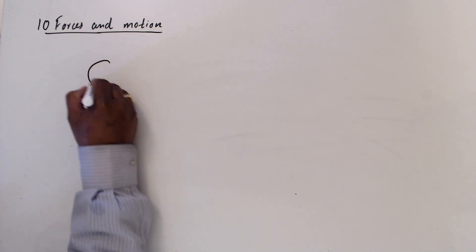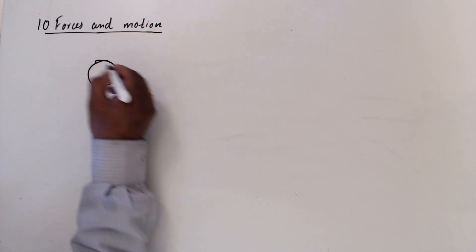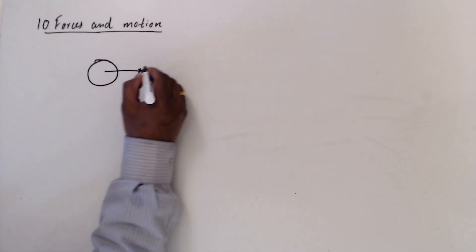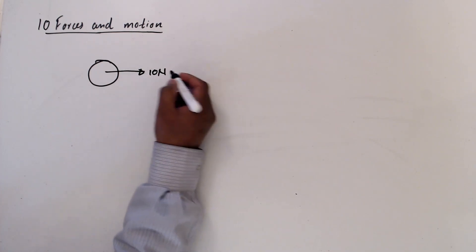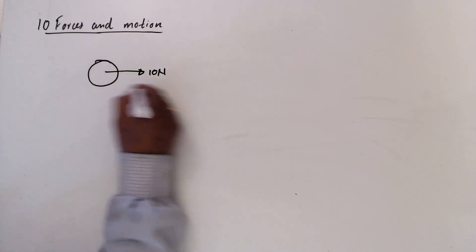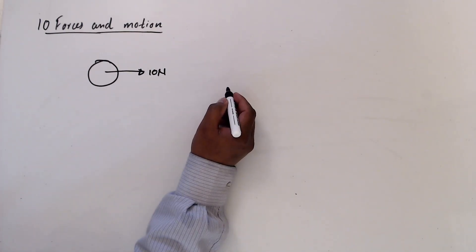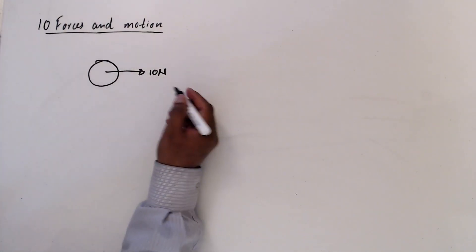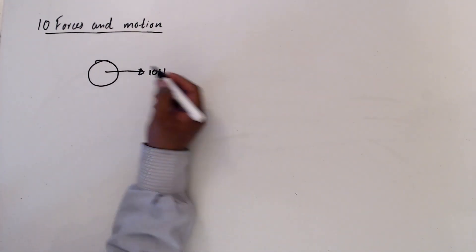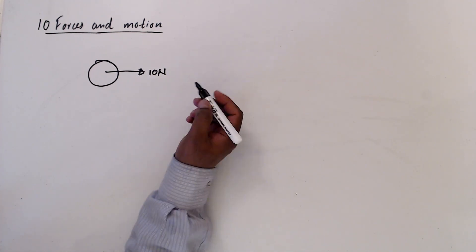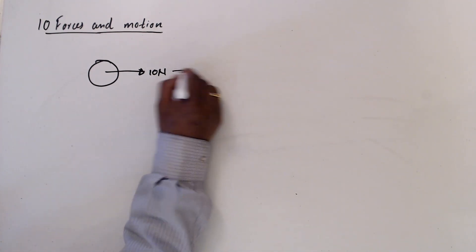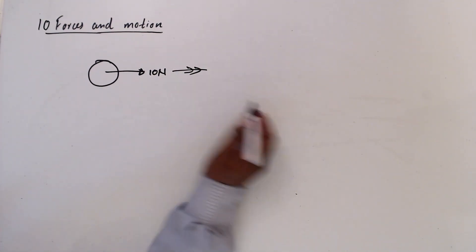Assume this is a particle and I will give a 10 Newton force along the x-axis. It is really obvious that it is moving in this direction because the force is in this direction.